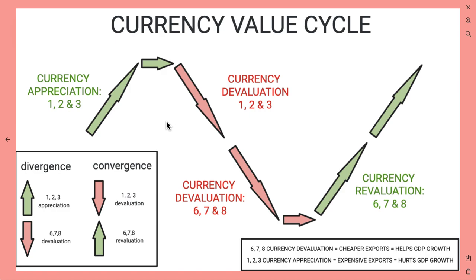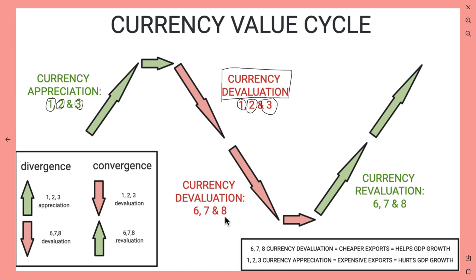If you're not aware of this, there are times when a currency ranked number one on the spreadsheet - which we would typically say is a buy - could actually be a sell. In the same way, a currency that has been devaluing for a while could actually start to revalue. A currency ranked six, seven, or eight could actually start to revalue.